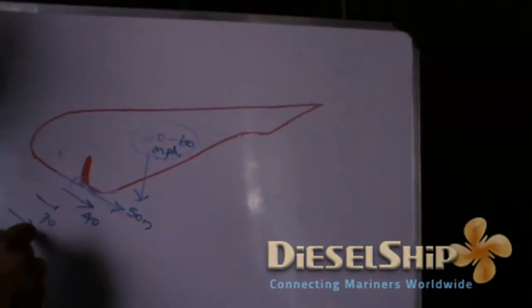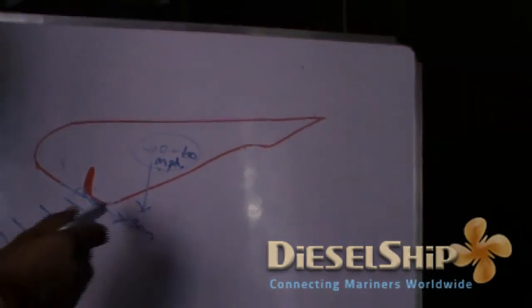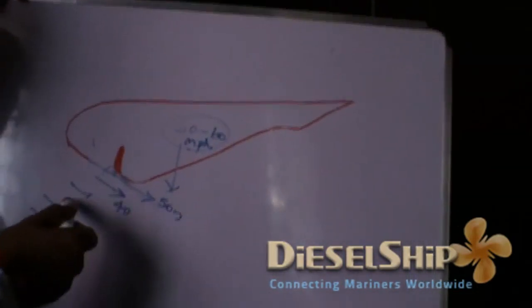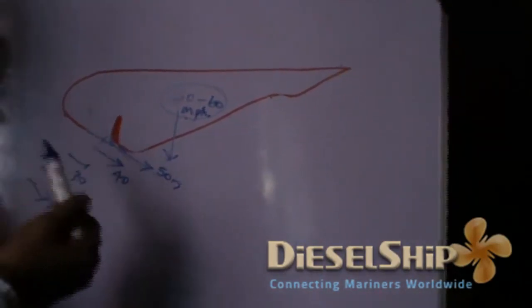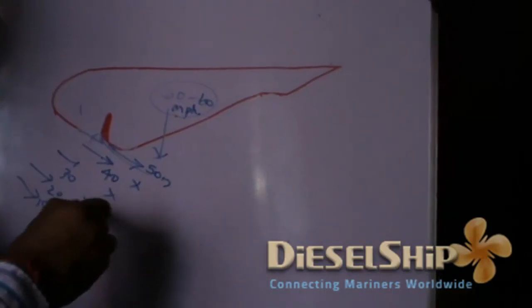20 and 10. So it keeps on adding and the cascading effect continues. That's how the air is getting multiplied.